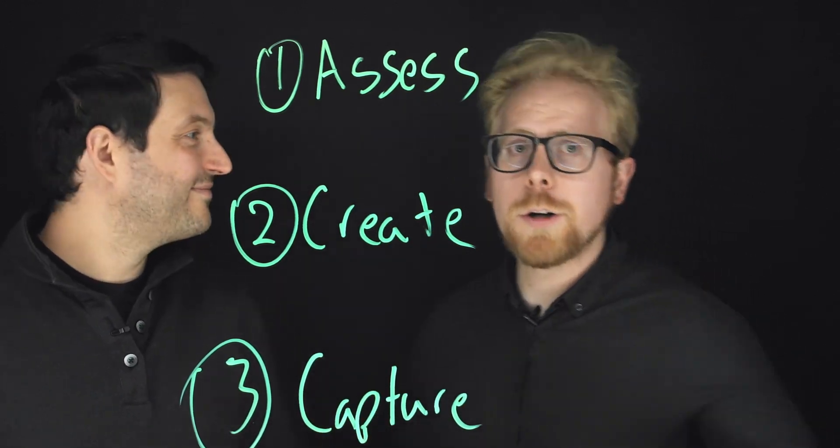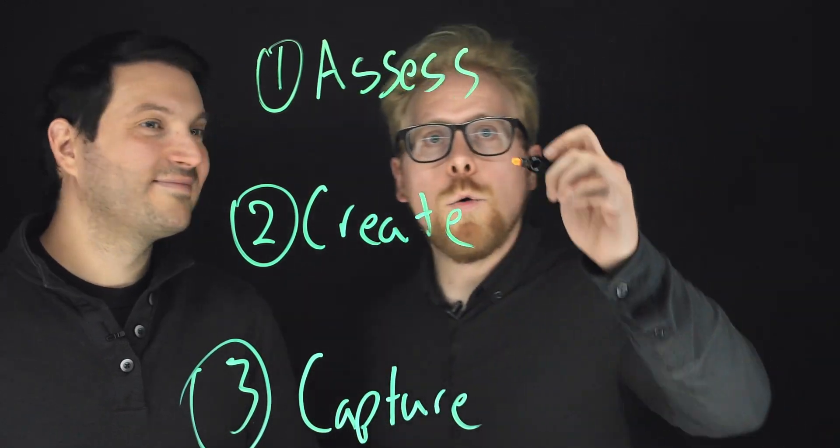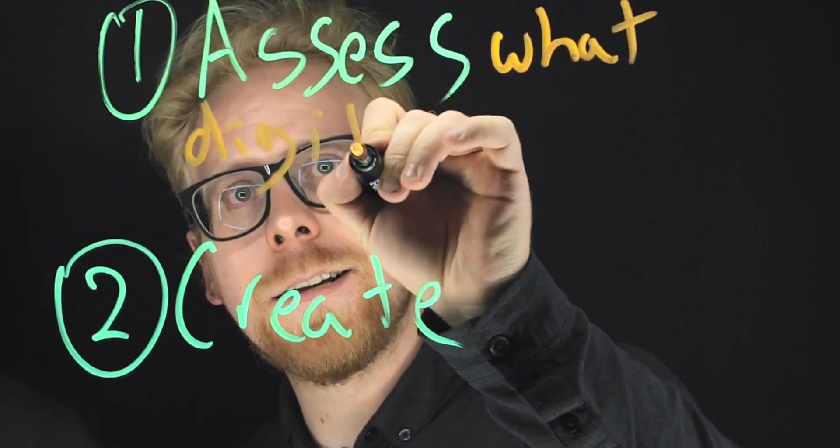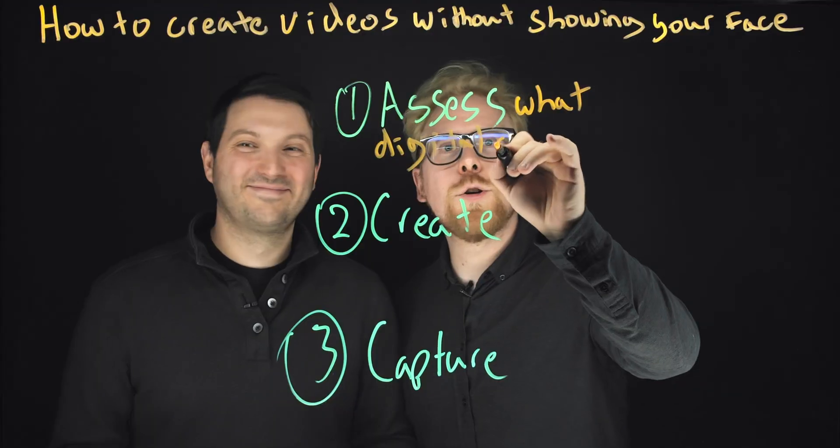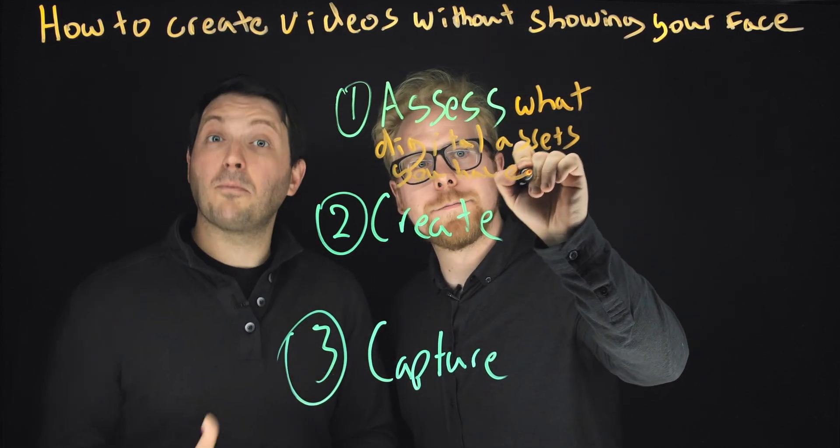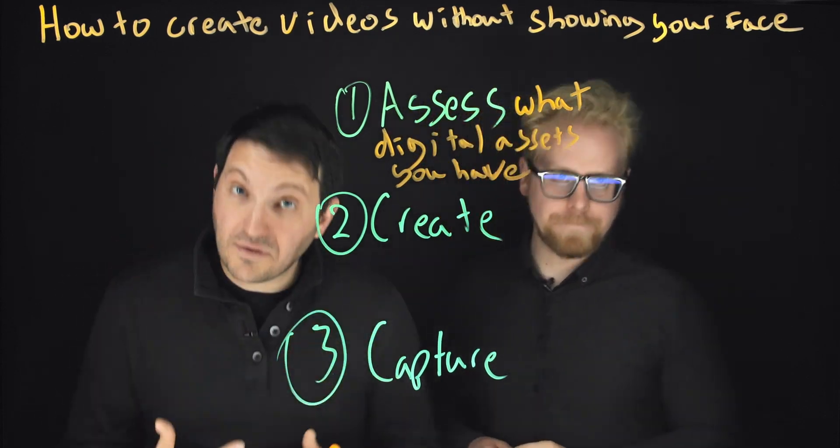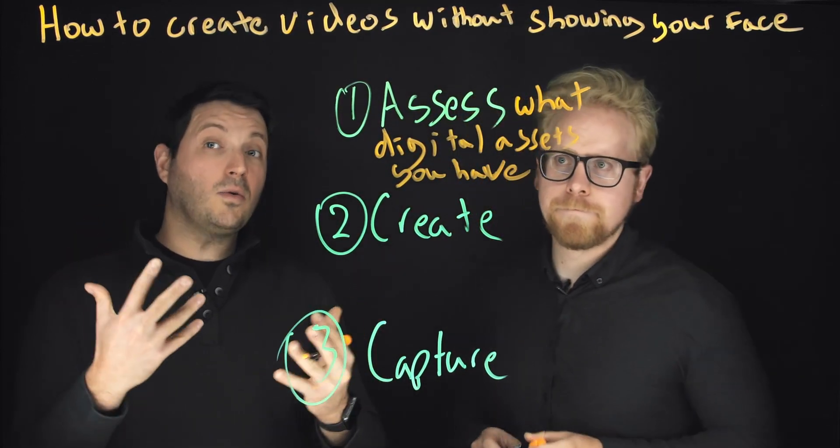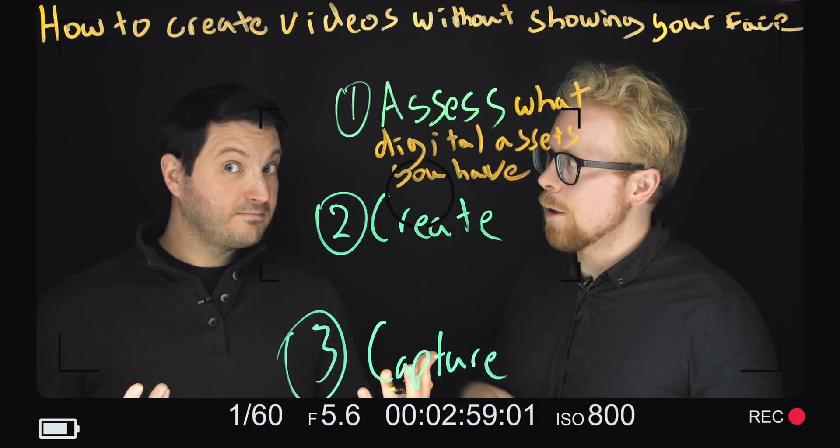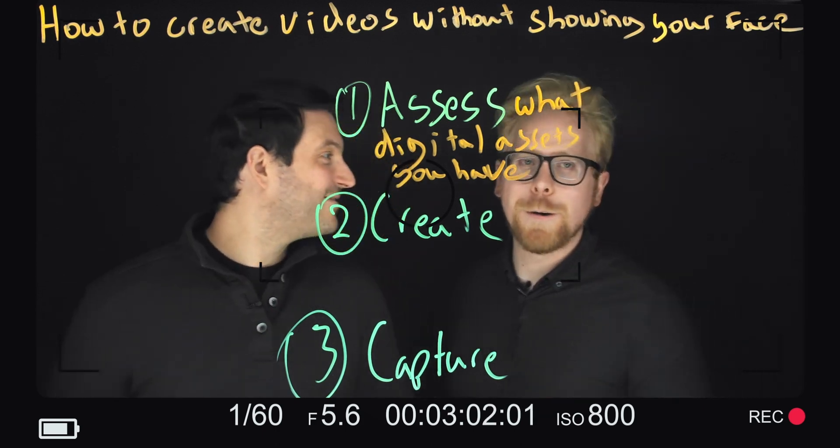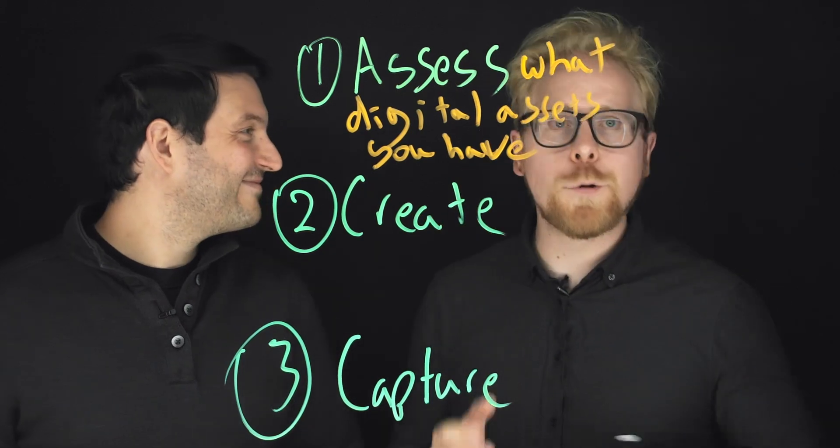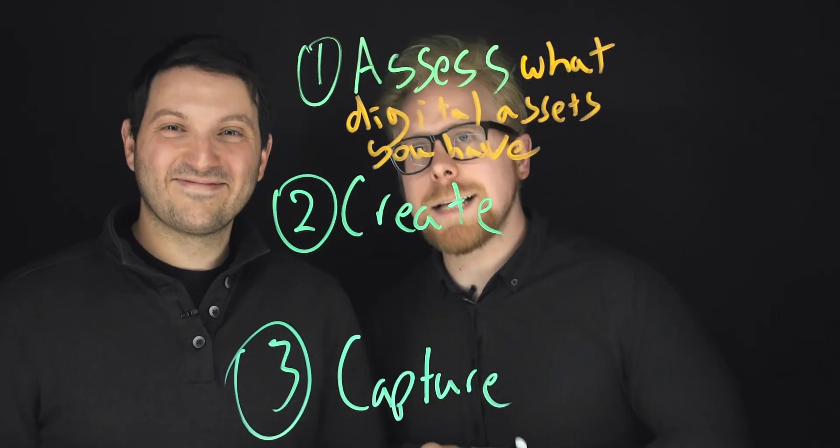So here's what you're gonna do. You're gonna start by assessing what digital assets you have. Right? You may have some PowerPoints, you may have some PDFs already created. So we want to make sure that you assess what you already have, which processes you have that you can digitally show, like softwares that you can capture. You want to assess all that.